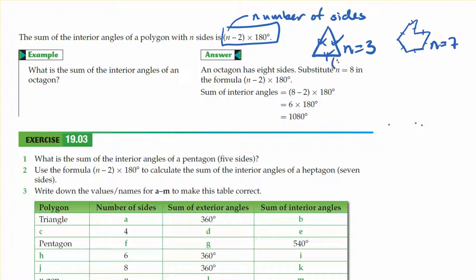for the triangle, you would go 3 minus 2 times 180, which is just 180 degrees. 3 minus 2 is 1, times 180 is 180.